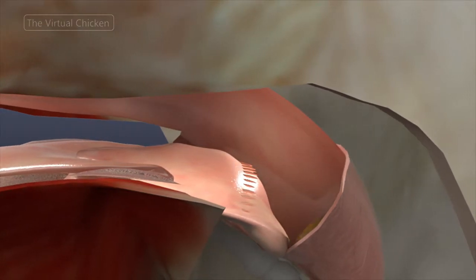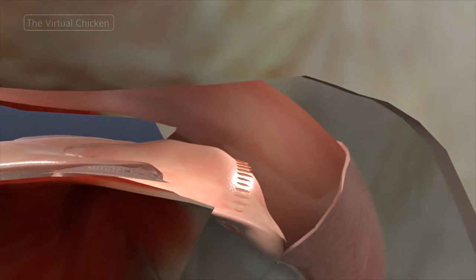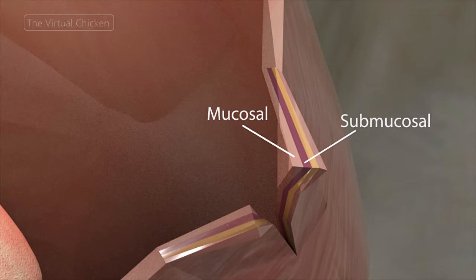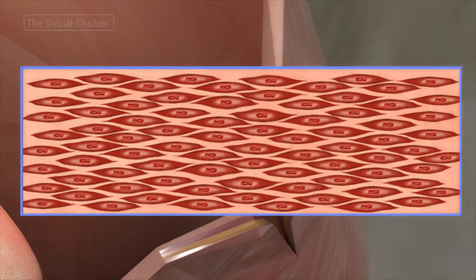The avian esophagus allows birds to swallow their food whole. Its walls are made up of four layers: mucosal, submucosal, muscle tunic, and the serosal layer, which contains only smooth muscle cells.